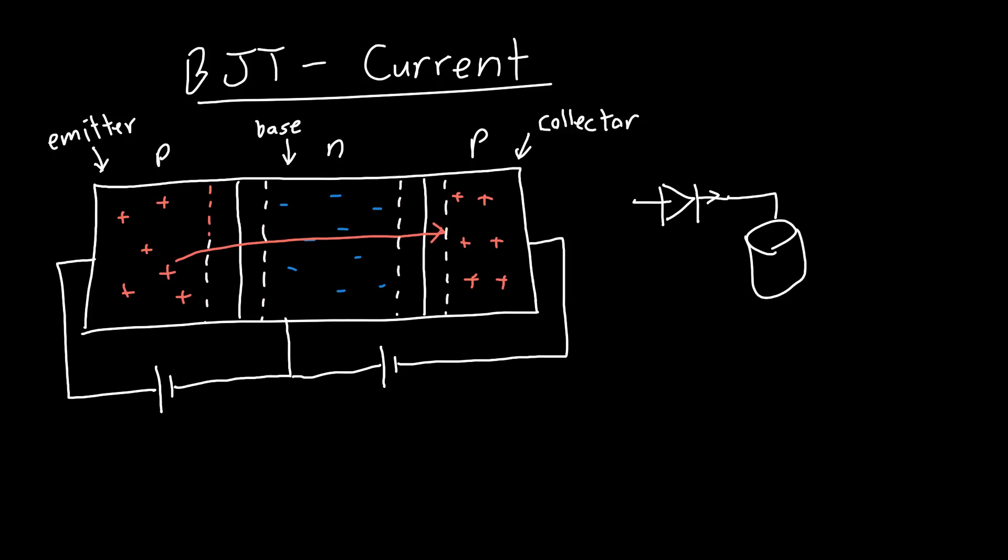So how do we find the current? The two things that we want are the current flowing across this junction, across this first PN junction, and the current flowing across this second PN junction. If we have those, then we have all the other currents in the system because we can just use KCL.